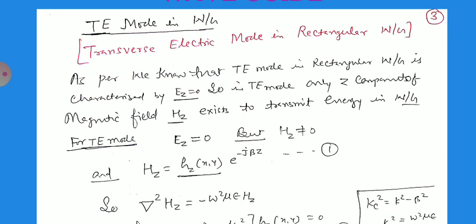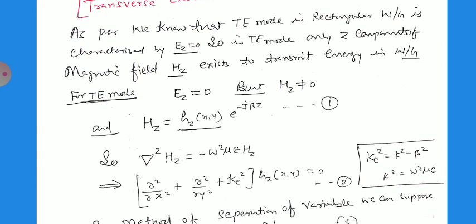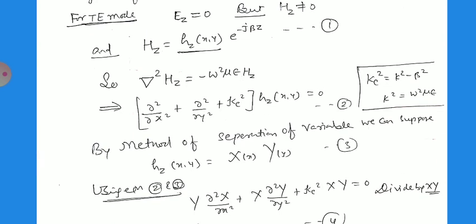In TE mode only the z-component of the magnetic field, Hz, exists; there is no Ez. It is useful for transmitting energy in the waveguide. For TE mode, Ez equals zero but Hz is not zero. We write Hz equals small hz(x,y) times e^(−jβz), and the wave equation becomes del²Hz equals minus omega²·mu·epsilon·Hz. In component form: ∂²/∂x² + ∂²/∂y² + kc² times small hz(x,y) equals zero, with kc² equals k² minus beta². We solve this using the method of separation of variables, writing hz(x,y) equals X(x)·Y(y).